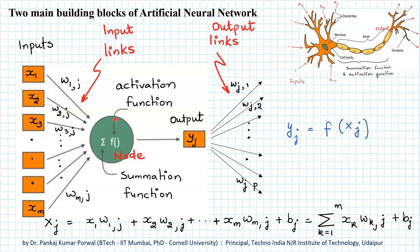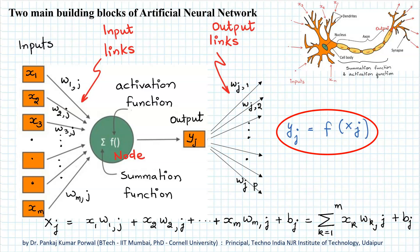If we denote the input to our node as xj, then xj equals x1·w1j plus x2·w2j plus up to xm·wmj plus bj, which we can write in compact summation notation. The activation function takes xj as input and gives yj as output, so the output of the activation function can be written as yj = f(xj), and this output is passed on to other nodes.